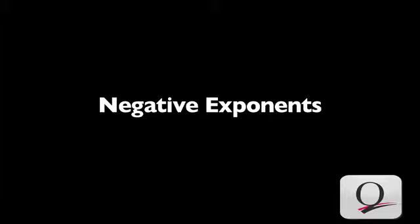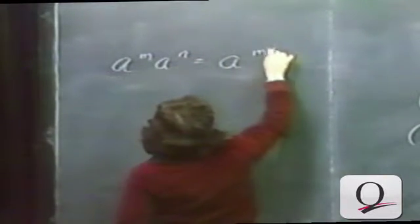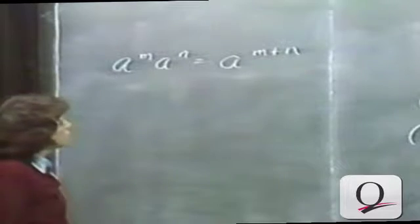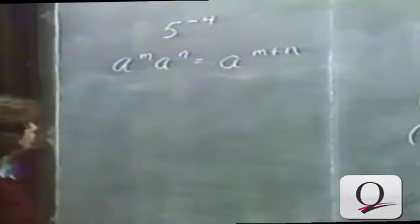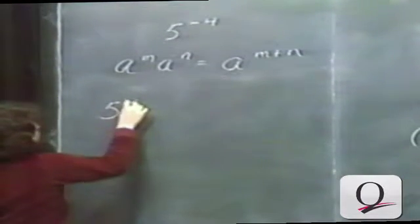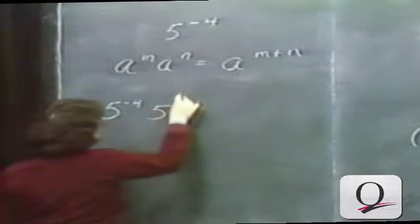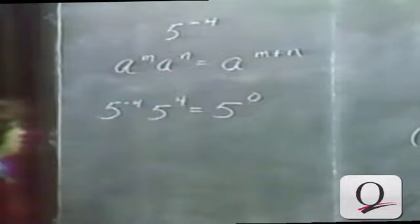That takes care of zero exponents. Now the question is, what about negative exponents? Once again, we want our rules for natural number exponents to hold true, starting with a to the m times a to the n is a to the m plus n. We're going to try to give some meaning to something like 5 to the minus 4 power. It stands to reason that 5 to the minus 4 times 5 to the 4 should be 5 to the minus 4 plus 4 power, or 5 to the 0 power, which is 1.